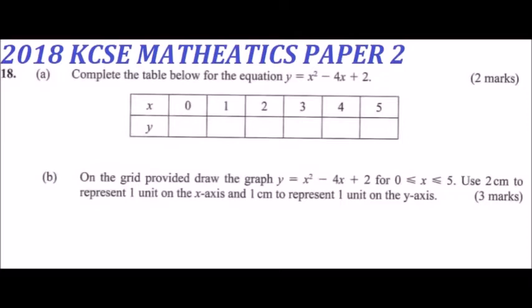We substitute the values of x into the equation. When x = 0: 0 - 0 + 2 = 2, so y = 2. When x = 1: 1 - 4 + 2 = -1. When x = 2: 4 - 8 + 2 = -2.